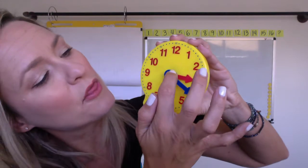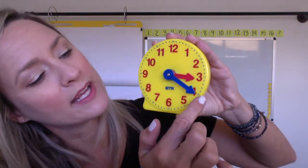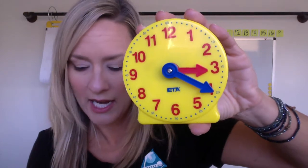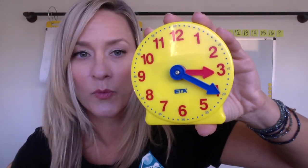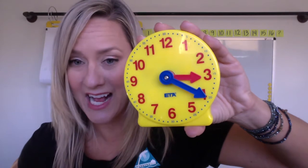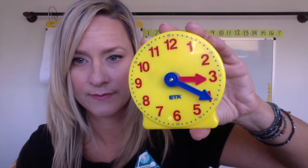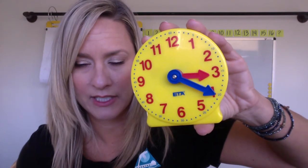Okay. It should look like this. My hour hand's at three. My minute hand's pointing to the 20. I want you to add one hour and 10 minutes. One hour and 10 minutes. Everybody take your time. Figure it out on my clock first.